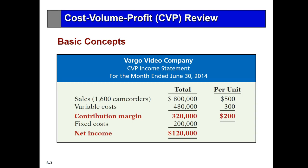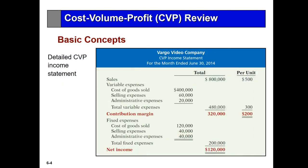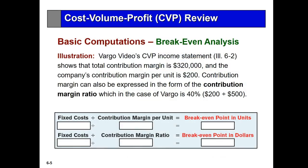That's the contribution margin in total. We can also determine the contribution margin per unit if we know the number of units sold — in this case, 200 units. That's how a basic income statement can be expressed into a management-type statement called the variable costing statement, or cost-volume-profit income statement. From that we can do break-even analysis. Break-even is zero profit. Vargo Video's income statement shows a total contribution margin of $320,000 and a contribution margin per unit of $200.